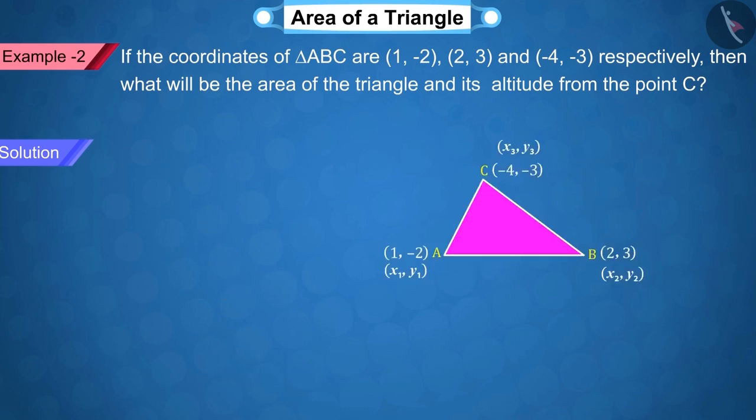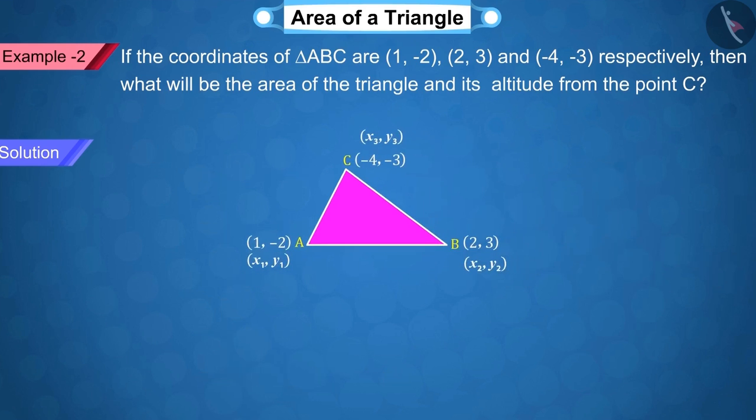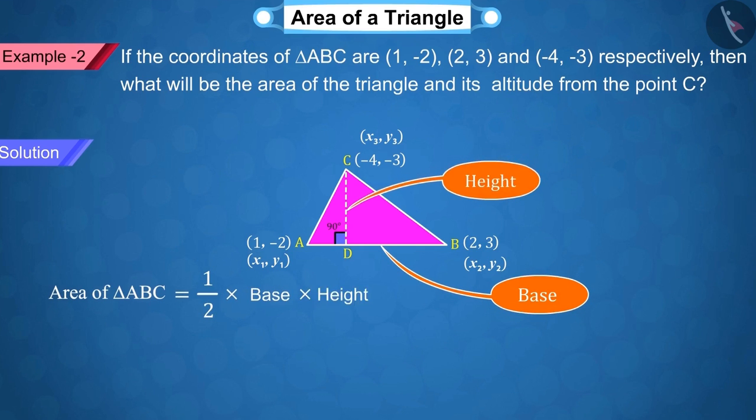Now, can you guess how will we find the height, that is, the altitude of this triangle? Very good. We know that the altitude of a triangle makes an angle of 90 degrees with the base. Then, the area of the triangle is ½ × base × height which is represented by equation 2.